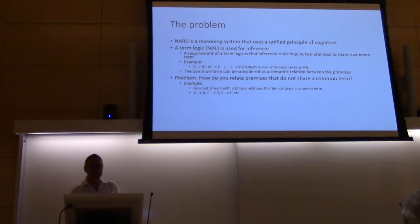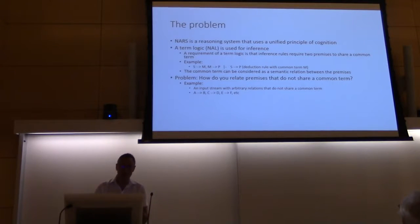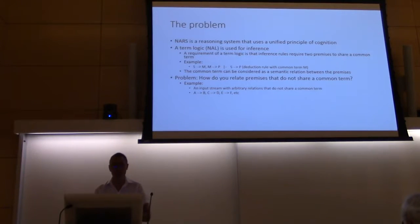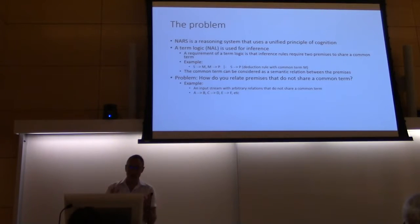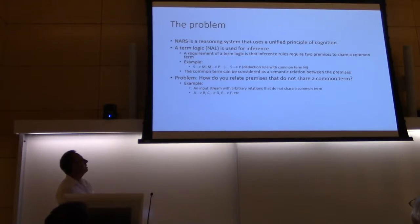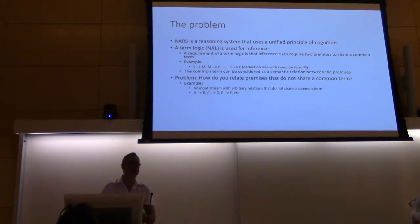What's the issue here? NARS is a reasoning system, usually used by principle cognition. It uses a term logic, and a common requirement of that term logic is that the two premises Patrick mentioned need to have a common term in order for the inference rules to work. But this becomes a problem when you want to generate arbitrary relations between incoming streams that have no common term. For example, we have premise AB and premise CD — there is no common term. So suddenly the elegance of the term logic lets you down.